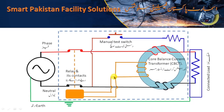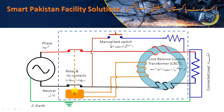Let us see its construction. This is the basic circuit diagram of ELCB. This dotted portion is the part of ELCB. It consists of two main components: the current transformer and the circuit breaker relay. This is known as the Core Balance Current Transformer, whose abbreviation is CBCT. It has two primary windings and one residual winding, which operates this relay in case of a fault in the load.